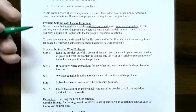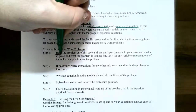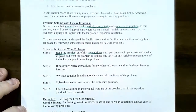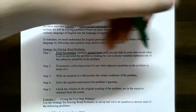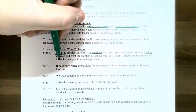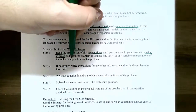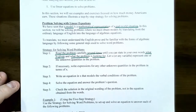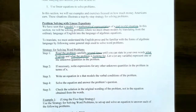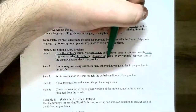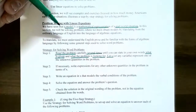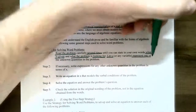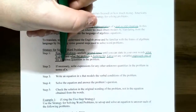The first step should always be to read the problem carefully — read it several times if necessary — until you can state in your own words what is given and what the problem is asking you to find. Whatever the problem is asking you to find, that's typically what you're going to represent the variable as. So let x, or any variable you want, represent one of the unknown quantities in the problem.